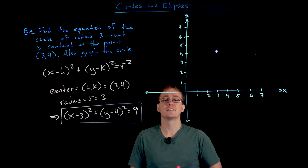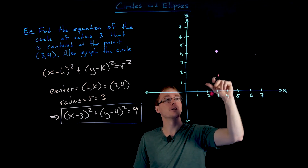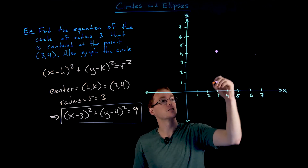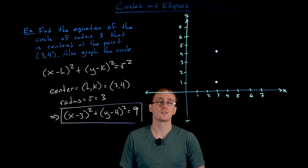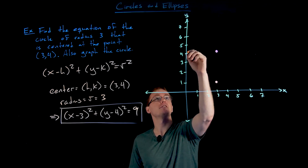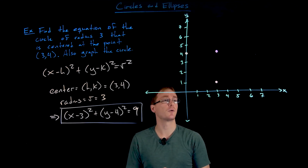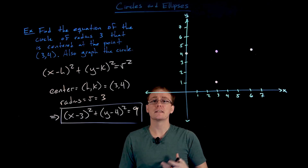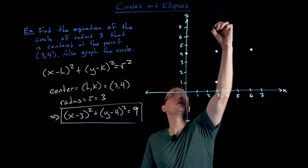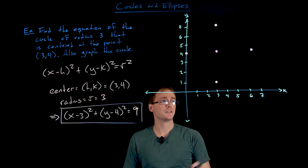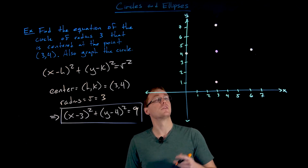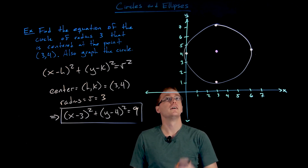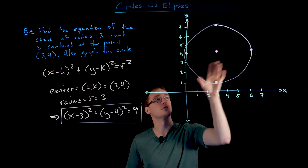Those four points should be enough to sketch our circle. Going down three units from center gives a point on the circle; three units to the left gives the point (0, 4); three units to the right gives (6, 4); and three units up gives the top of the circle. Now we connect the dots. It's a rough sketch by hand and may look more like an ellipse, which we'll talk about next, but the idea gets across.